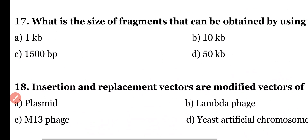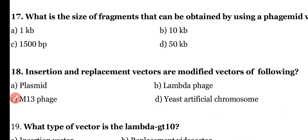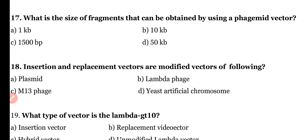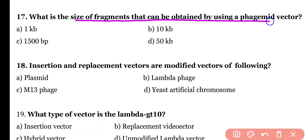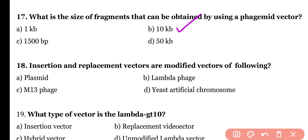Question 17: What is the size of fragments that can be obtained by using a phagemid vector? 1 KB, 10 KB, 1500 BP, or 50 KB. Correct answer is option B. A maximum of 10 KB fragments can be obtained by using a phagemid vector.